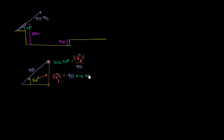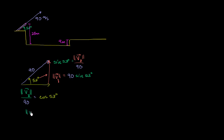If we want to find the horizontal component, the horizontal side is adjacent to the angle. Cosine is adjacent over hypotenuse — that's SOH-CAH-TOA. So the horizontal component of our velocity over 90 equals cosine of 53 degrees. Multiplying both sides by 90, the horizontal component equals 90 times cosine of 53 degrees.